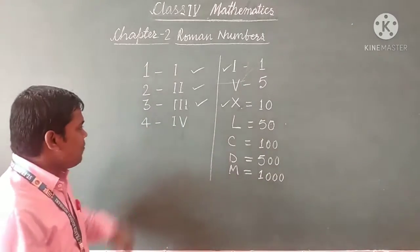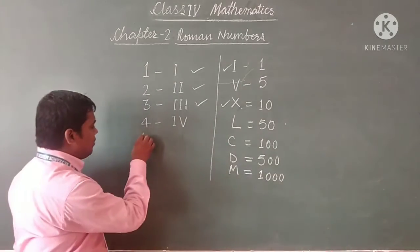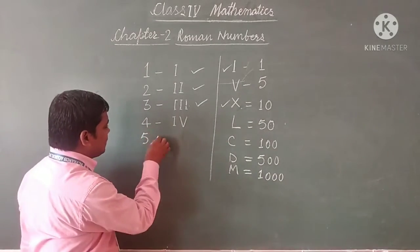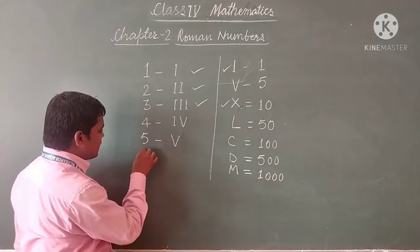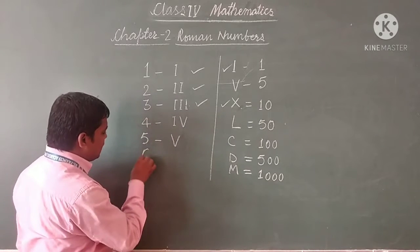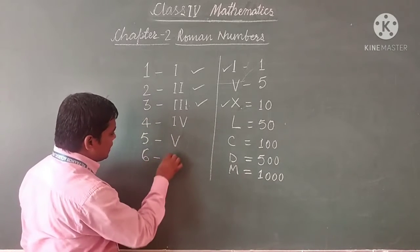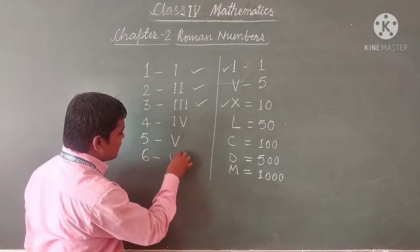Similarly, if we have to write 5 then we write V, and for 6 then we write VI like this.